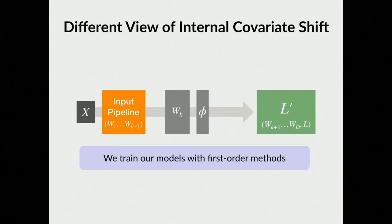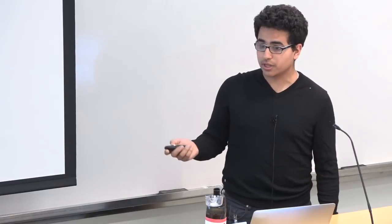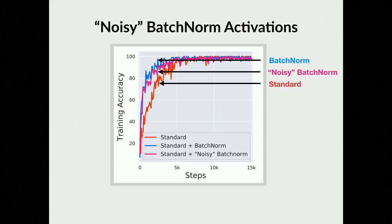Given this, we said: what if we throw away this distributional view of internal covariate shift and take a more optimization-based view? Batch norm was introduced to help optimization, so maybe we can just throw away all our distributional ideas about it and think about how it affects the actual optimization problem at each layer. For the noisy batch norm picture, the result is pretty robust — we tried really hard but we couldn't get it below the standard one, unless you cause exploding gradients.